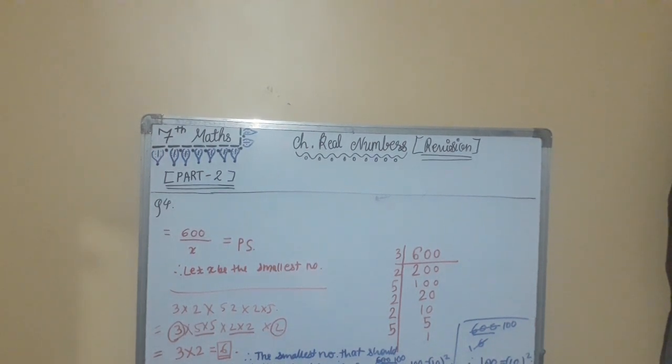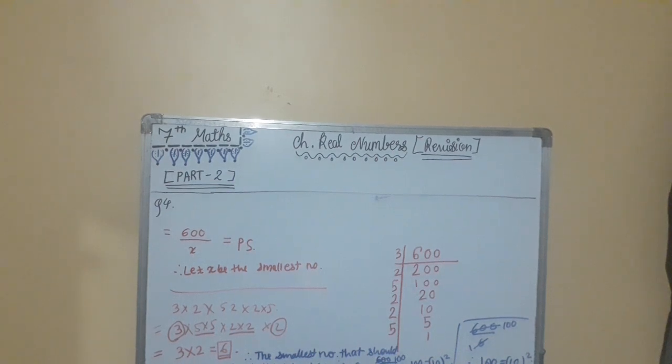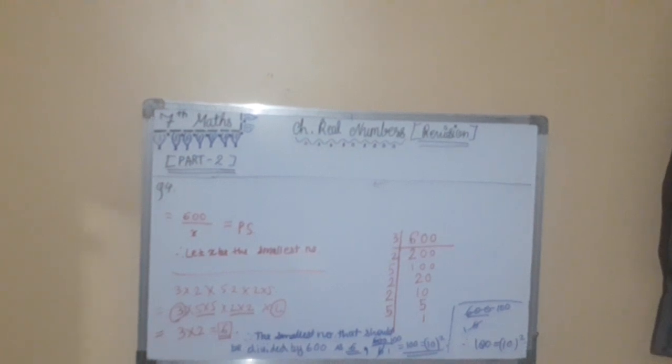Now, the next question is question number 5. What is the smallest natural number by which 2,2,0,5,0 should be multiplied so that the resulting natural number will be a perfect square?